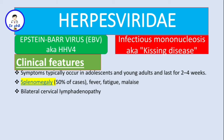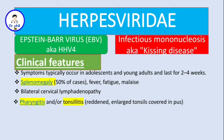Another symptom is bilateral cervical lymphadenopathy — enlargement of the cervical lymph nodes — which can be fatal because this enlargement can actually block the upper airway. The other symptom is pharyngitis or tonsillitis, where the tonsils will be red and enlarged.